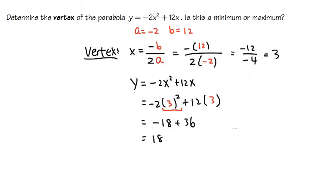So, we know that the vertex is the point 3 for the x value, comma, the y value is 18. 3 comma 18, that's the vertex. And then is this the minimum or maximum? How do we know? Well, let's think about it.